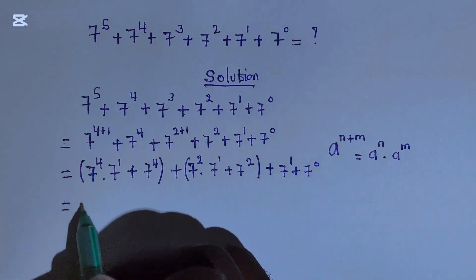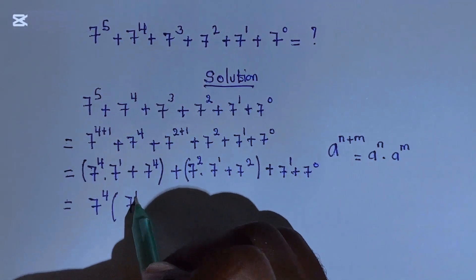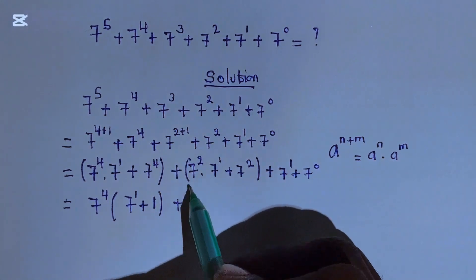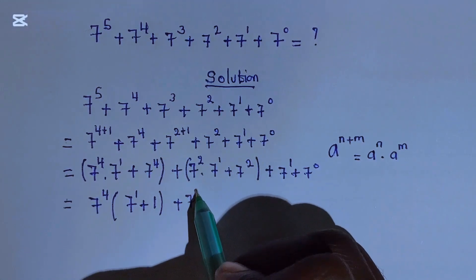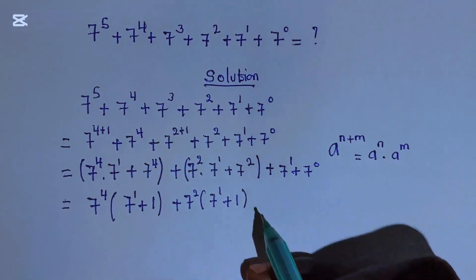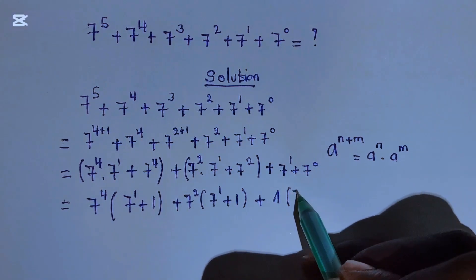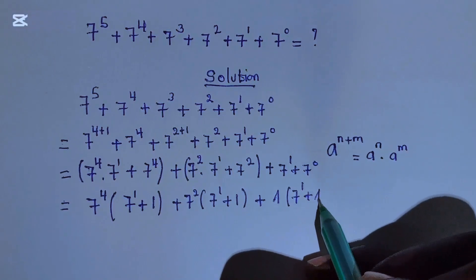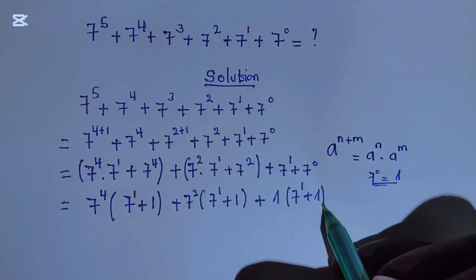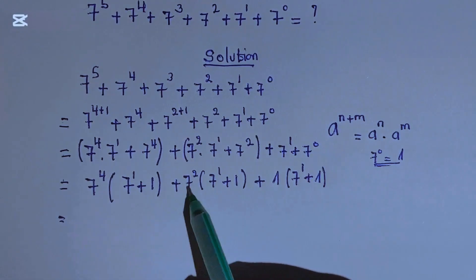Here we can factorize 7 to the power of 4 outside to get 7 to the power of 1 plus 1. Then here we can factorize again 7 to the power of 2 to get 7 to the power of 1 plus 1. Then here we can also factorize the 1 to get 7 to the power of 1 plus 1, due to the fact that 7 to the power of 0 is always equal to 1.